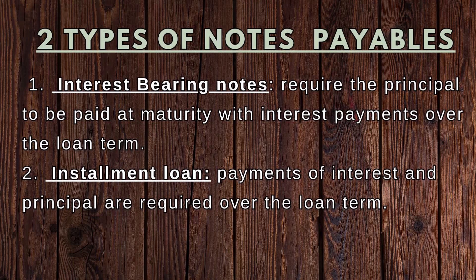The accounting for notes payables depends on the terms of the note. We are going to go over two of the most common types: interest-bearing notes that require the principal to be paid at maturity with interest payments over the loan term, and installment loans where payments of interest and principal are required to be paid over the loan term. Both are types of notes payables, but they serve different business purposes and operate in distinct ways.